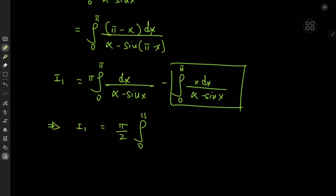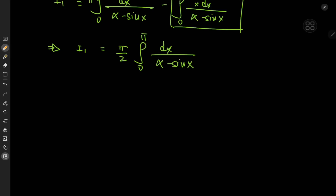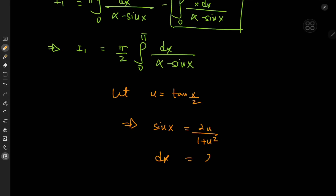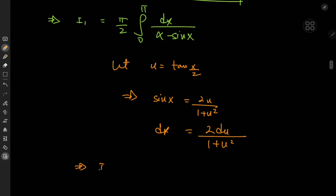For the Weierstrass substitution, we let u = tan(x/2). This implies that sin x = 2u/(1 + u²) and dx = 2du/(1 + u²). This follows from trigonometry and differentiation. So I₁ equals π/2 times the integral — but first we need to determine the new limits.